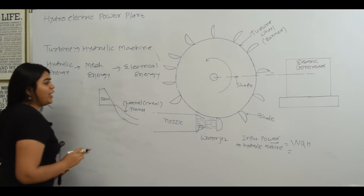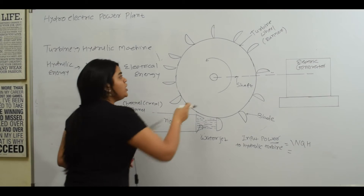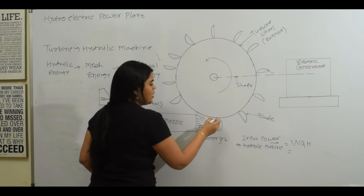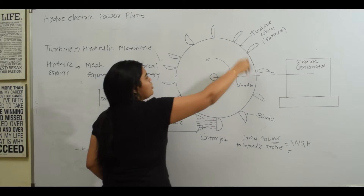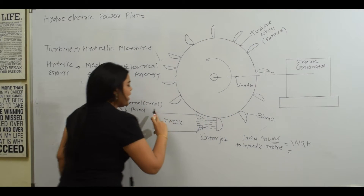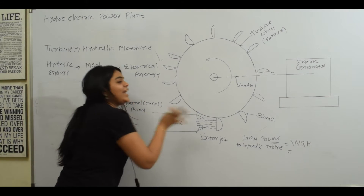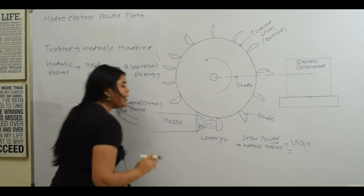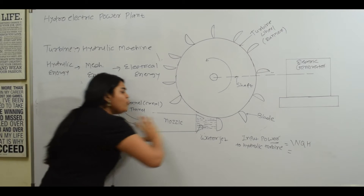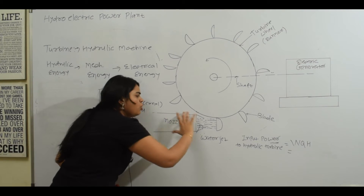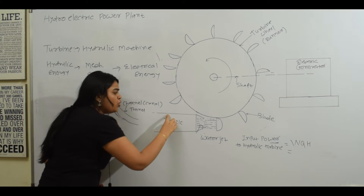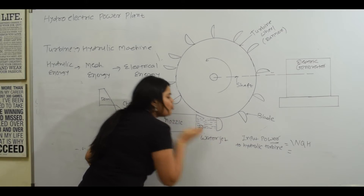Now I will explain with a figure. This is our turbine — also called the runner — and it has blades. There is also a nozzle: the nozzle is where the water will come in. When the water comes through the nozzle with full force — that means with full velocity — the fluid has mass and high velocity and will strike on the blade of the turbine.